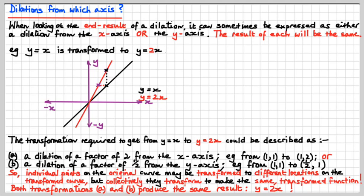Both transformations — a and b — provide the same result, which is y = 2x. This is a source of enormous confusion for students, but it's very simple: there's more than one way to get to the end result. All roads lead to the red curve. Different roads, same destination.